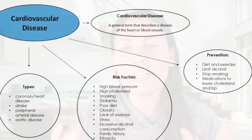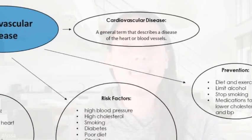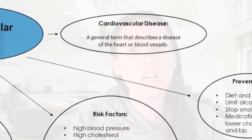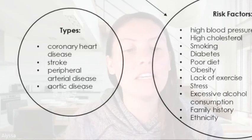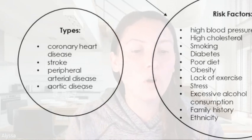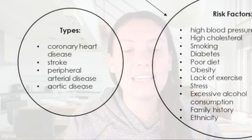So what is cardiovascular disease? It's really a general term that describes a disease of the heart or blood vessels. Now let's look at the different types of cardiovascular disease. We can have coronary heart disease, stroke, peripheral artery disease, or aortic disease.